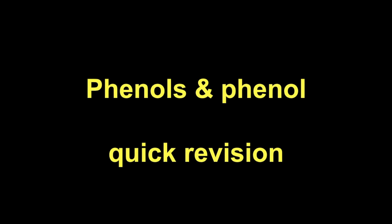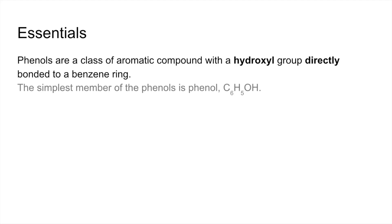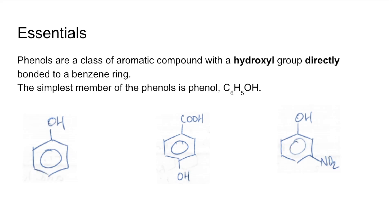Quick revision video on phenols and phenol. So some essentials. Phenols are a class of aromatic compound with a hydroxyl group directly bonded to a benzene ring. The simplest member of the phenols is of course phenol itself, C6H5OH. So there are three phenols shown, and you can see the OH group directly bonded to the benzene ring.